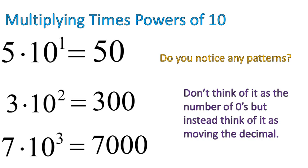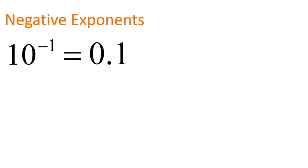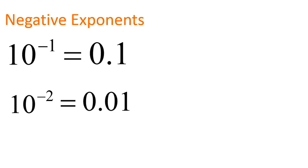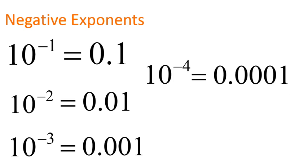And if we think about it in terms of moving a decimal, I think that will help with our future lessons on scientific notation, but it'll also help when we move into talking about our next topic. Our next topic is negative exponents. Negative exponents work kind of the same if you think about it as shifting decimals, because 10 to the power of negative 1 is 0.1, 10 to the power of negative 2 is 0.01, 10 to the power of negative 3 is 0.001.